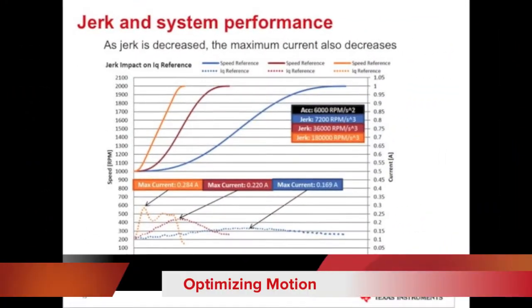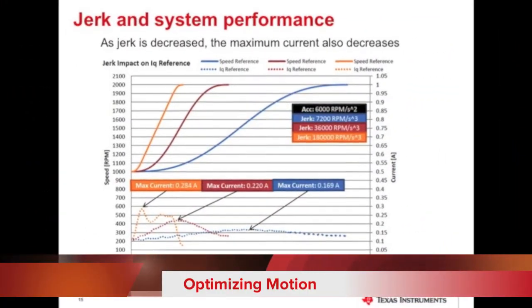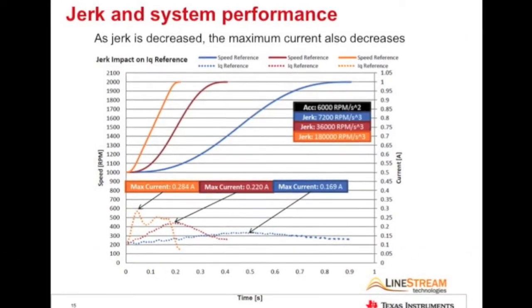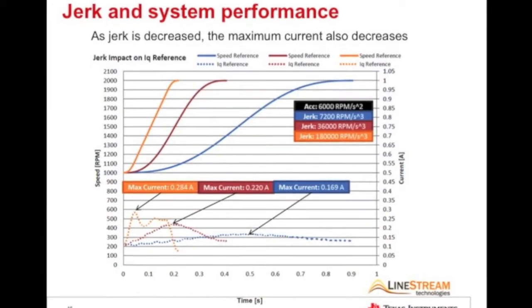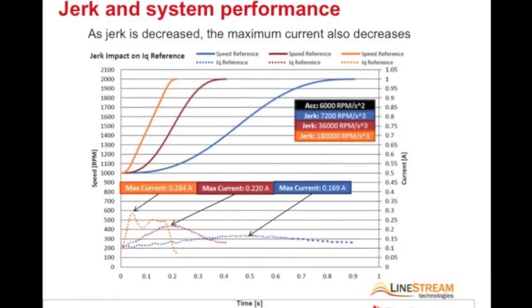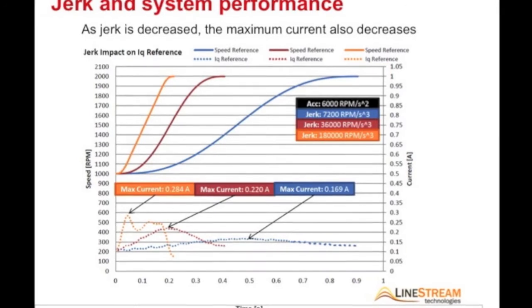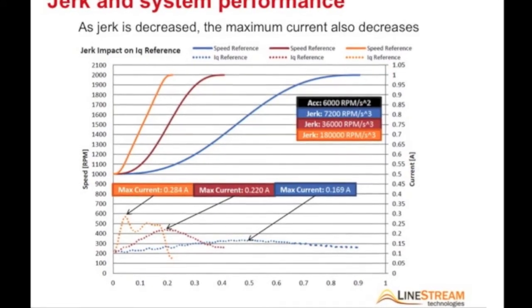So now that the ease of use wish list is satisfied, let's talk about optimizing motion. Jerk is the rate of change of acceleration. Jerk is important to consider in applications where fragile objects could be damaged. This includes elevators, conveyor belts, cutting tools.